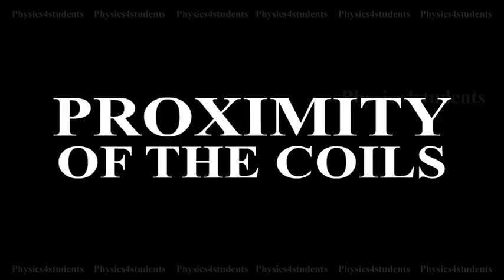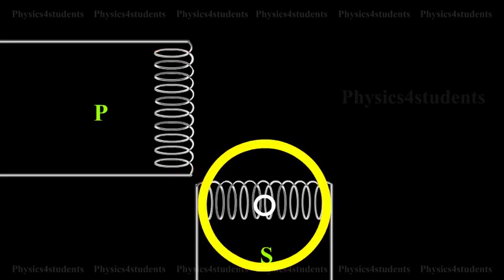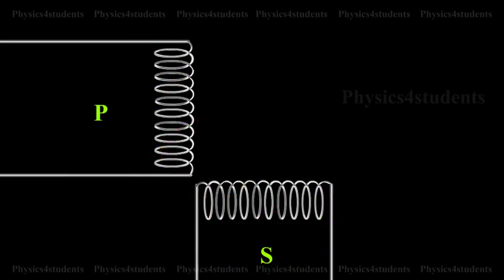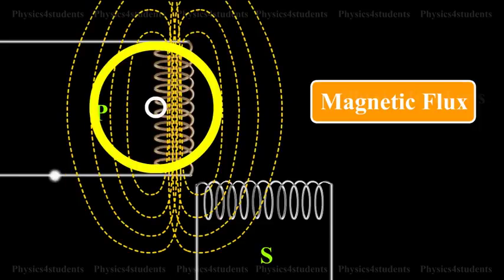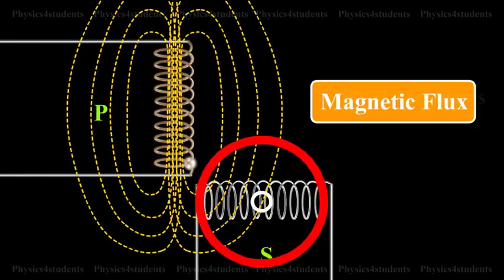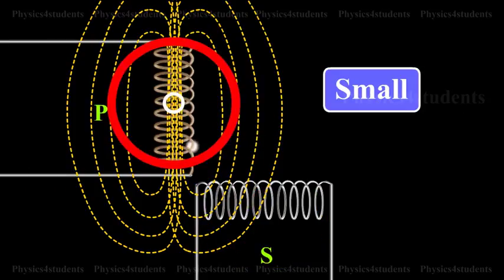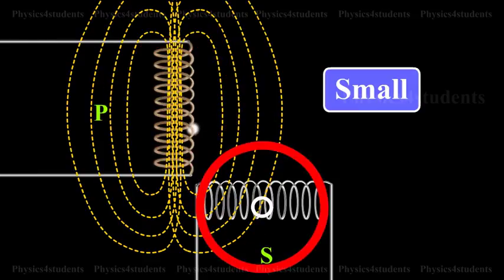Proximity of the Coils. Two coils P and S have their axes perpendicular to each other. When a current is passed through coil P, the magnetic flux linked with S is small and hence, the coefficient of mutual induction between the two coils is small.